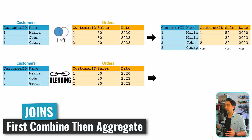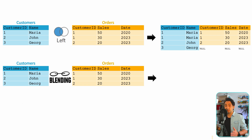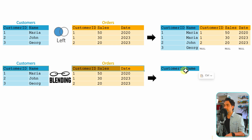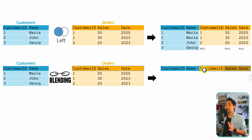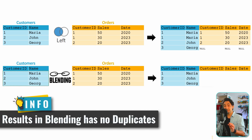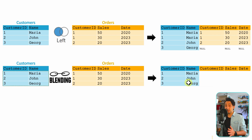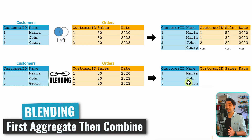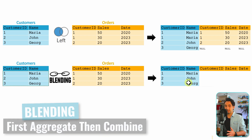With the left join, we first combine the raw data without any aggregations, and afterward in the visualizations we can compute the sum of sales or averages and so on. Now let's look at data blending. We have all the fields from the primary data source and all the fields from the secondary data source beside it. Like a left join, we get all three customers — but the main difference is there are no duplicates. Maria appears only once.